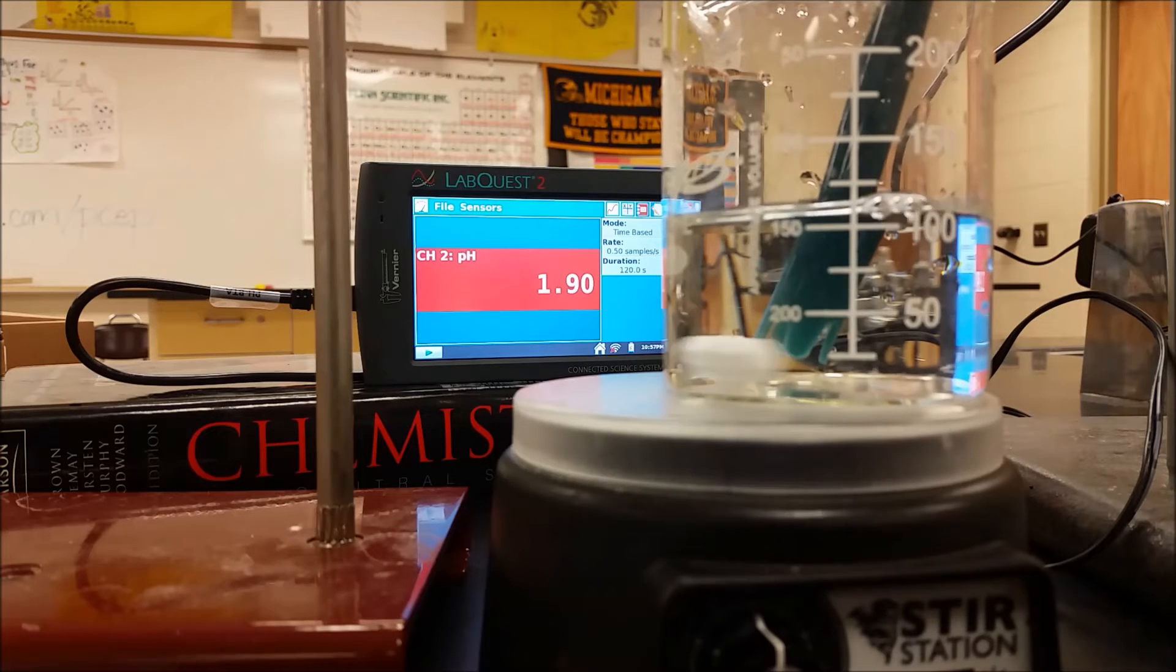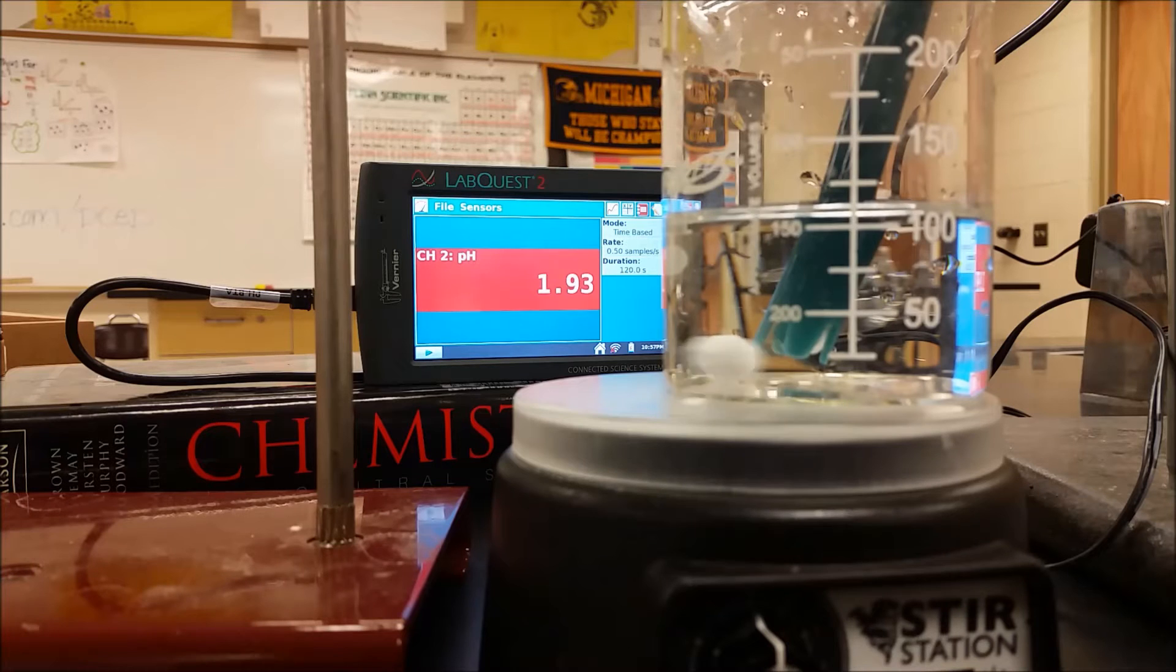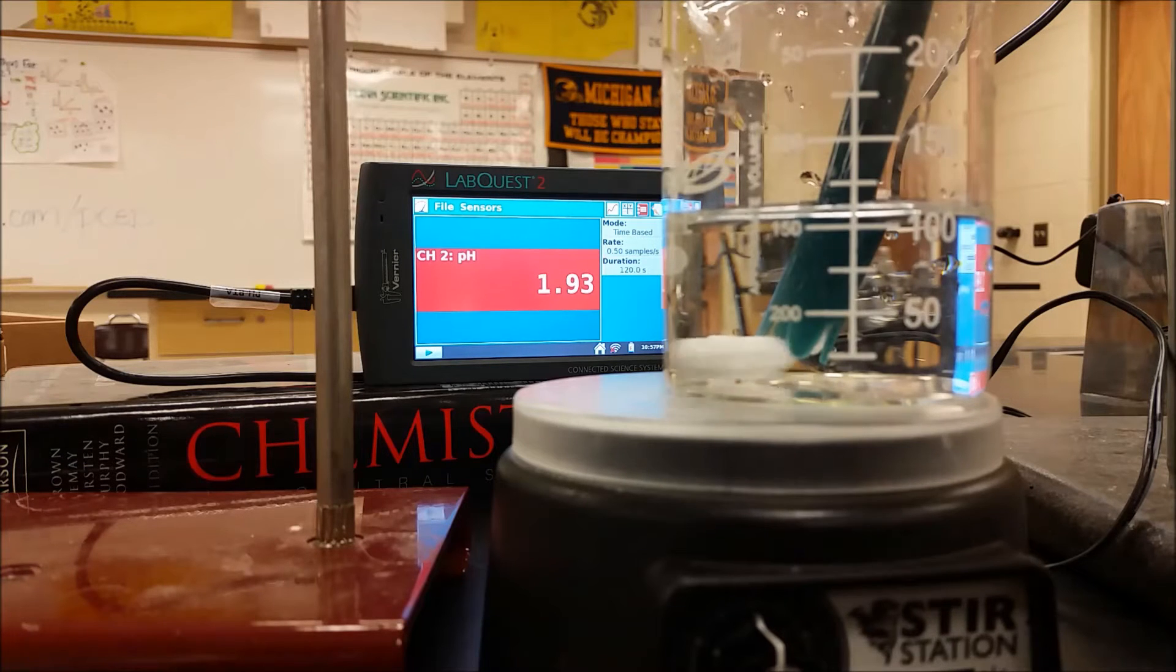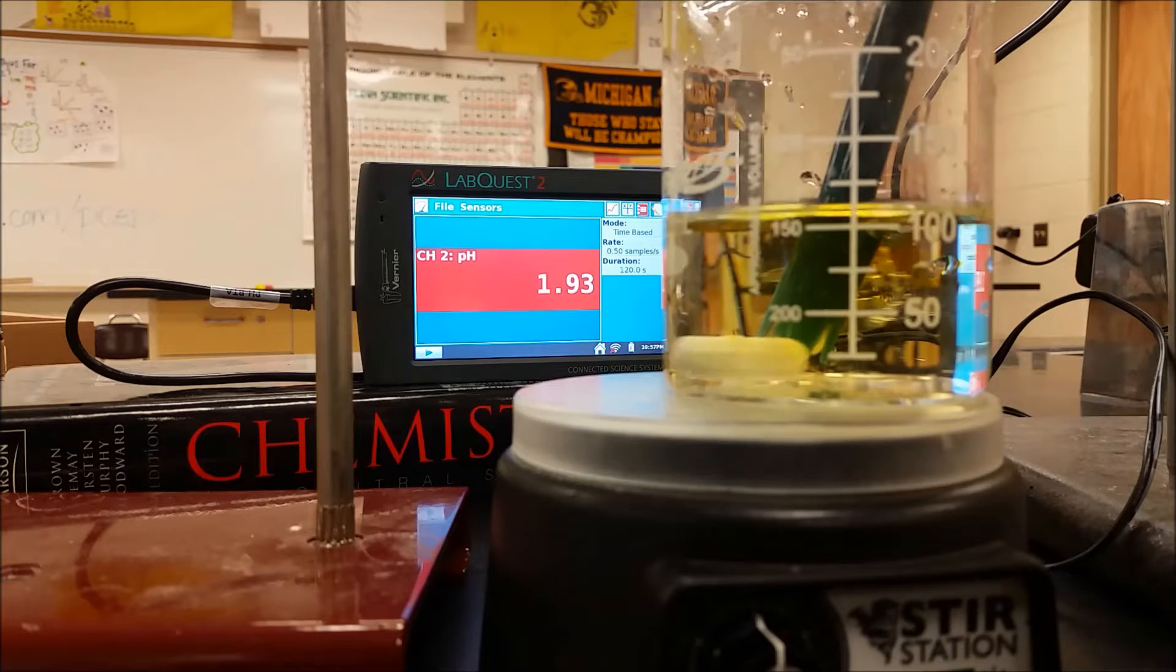Just take that and it's going to dilute that a little bit, but still give us a pH that's near one. I'm also going to add some bromothymol blue, it's going to turn yellow. That'll be our indicator for this.